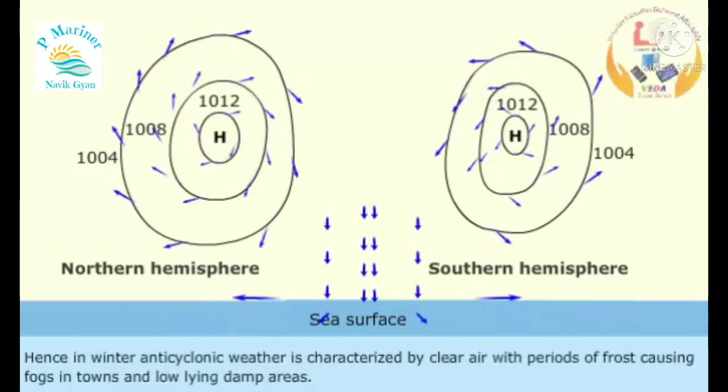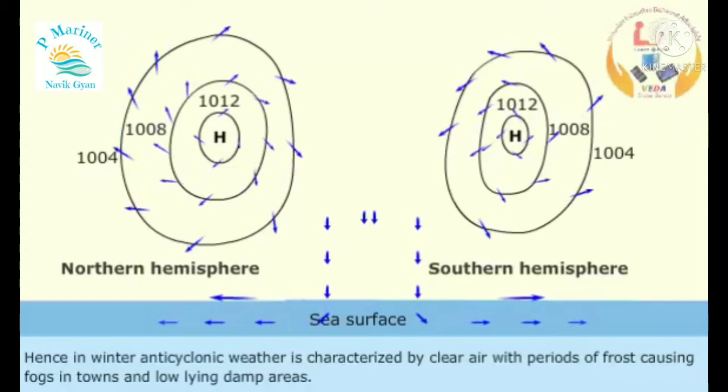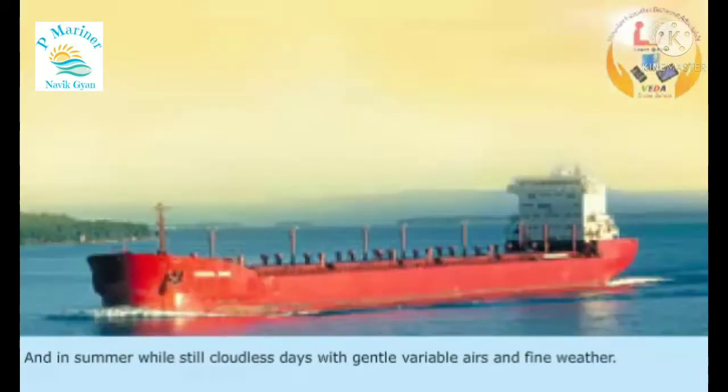Hence, in winter, anticyclonic weather is characterized by clear air with periods of frost, causing fog in towns and low-lying damp areas, and in summer by still cloudless days with gentle variable airs and fine weather.